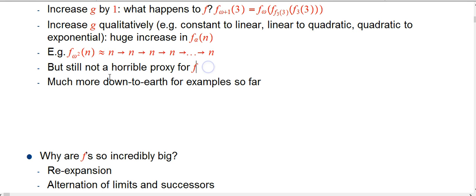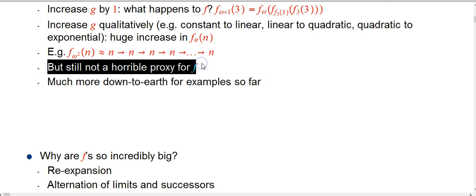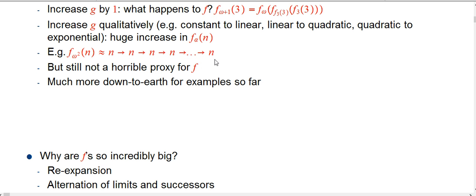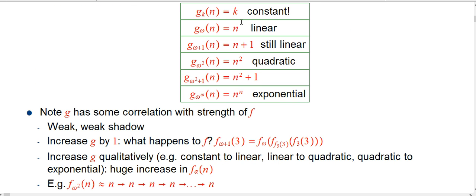So there's a lot of difference here. It is a super weak shadow, but the nice thing is there's a systematic correlation — it's not a horrible proxy for f. When g goes up by a tiny bit, f grows significantly. When g grows qualitatively, f grows tremendously. So it's not a bad idea to look at g and use that instead of trying to directly attack an understanding of f, which can be really, really difficult. We'll continue that story and pretty soon use this as a means for understanding much, much bigger f's than we've done before.